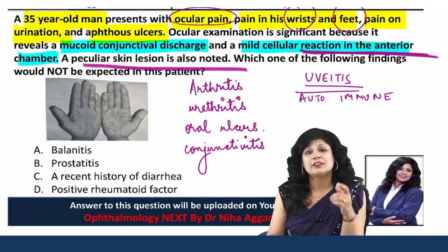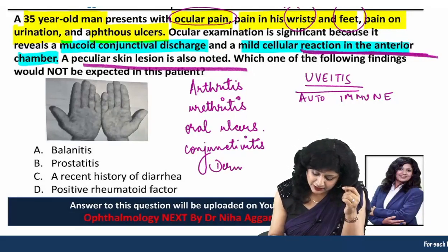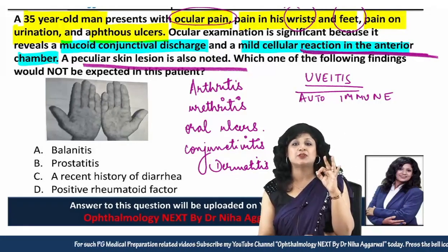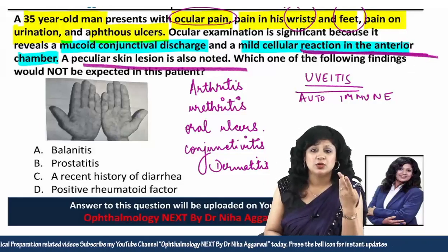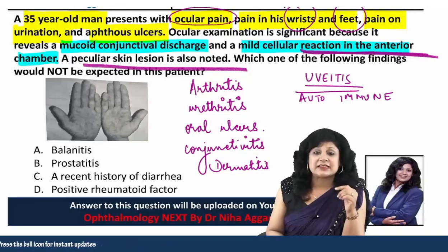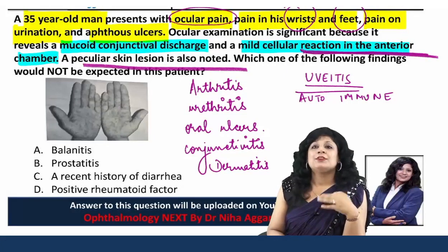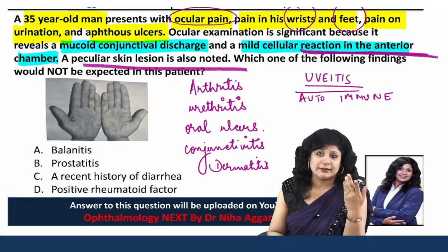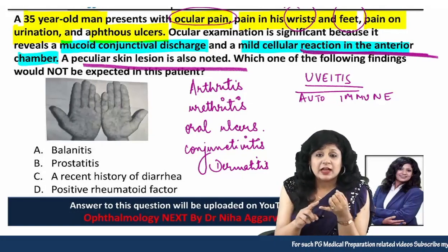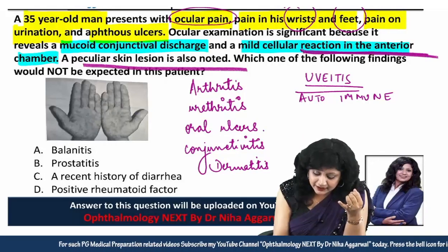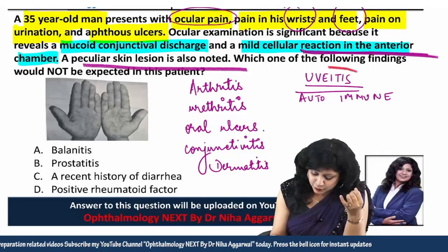There are also peculiar skin lesions, suggesting some autoimmune etiology. We have inflammation in nearly so many places: arthritis, urethritis, oral ulcers, and dermatitis. The question asks: which of the following findings would NOT be expected in this patient?